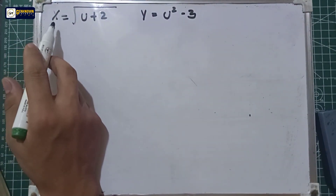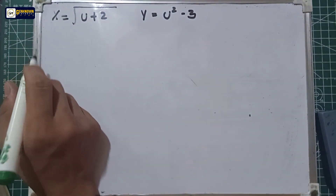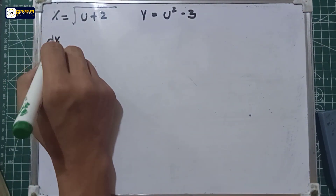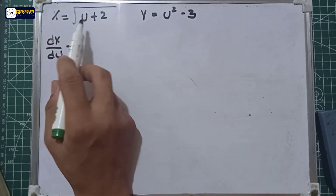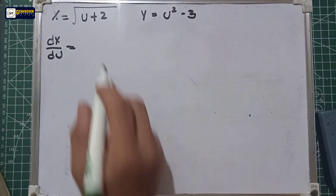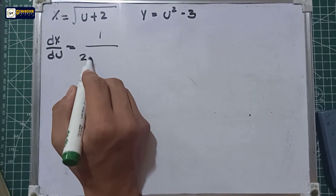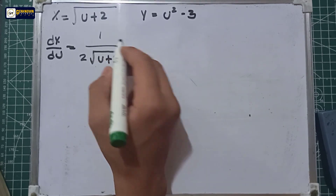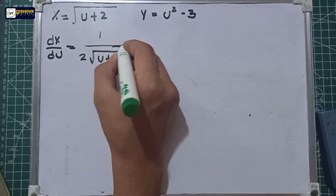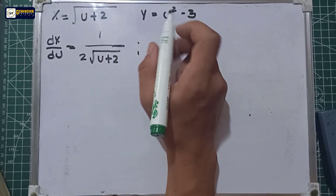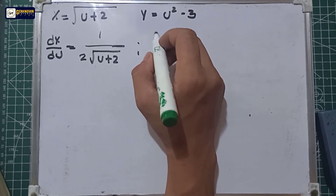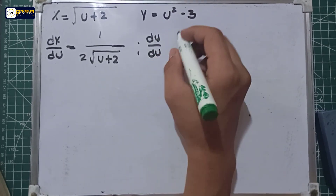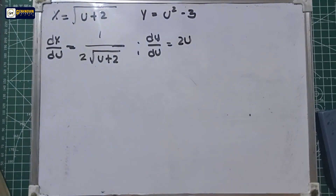For the x function, we will derive with respect to u. So dx over du is equal to the derivative of the square root of u plus 2, which is equal to 1 over 2 square root of u plus 2. And for y, dy over du is equal to 2u.